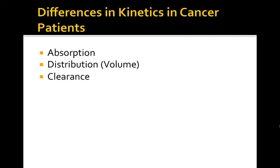What about changes in distribution or volume? When we think of volume, we think of obviously volumes in the body and, of course, protein binding. Many of our patients don't feel good when they have cancer, so they don't eat and they can become cachectic. They lose body fat, they lose lean body mass, and can have decreases in specific volumes of distribution.